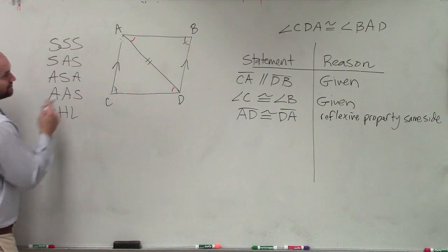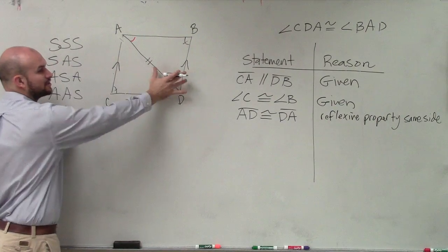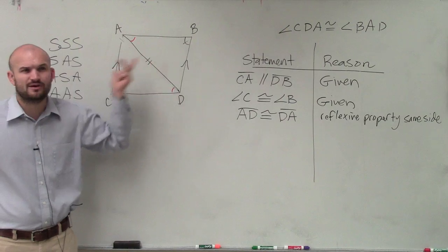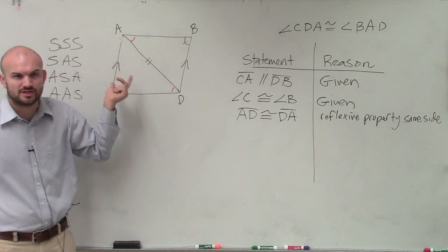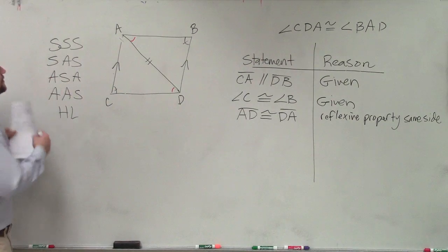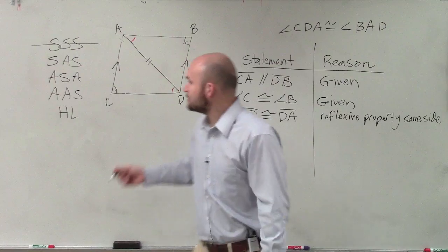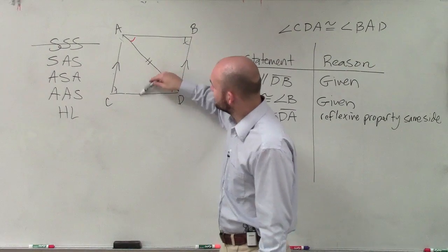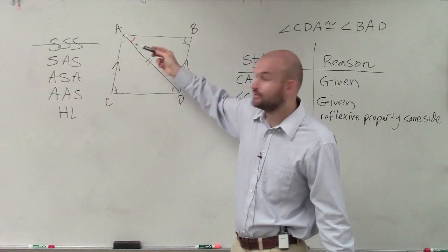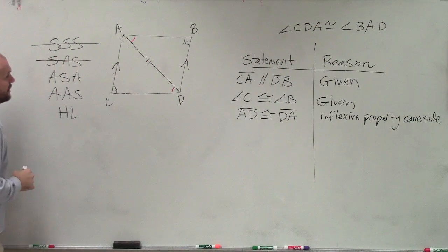Both triangles share the side AD, so we can say that line AD is congruent to line DA by the reflexive property — or what I commonly call the same side. That is something not given to us that we created. Now we know we have an angle and a side. Is there any way to prove those two lines are congruent? We know they're parallel, but SSS and SAS are not going to work.